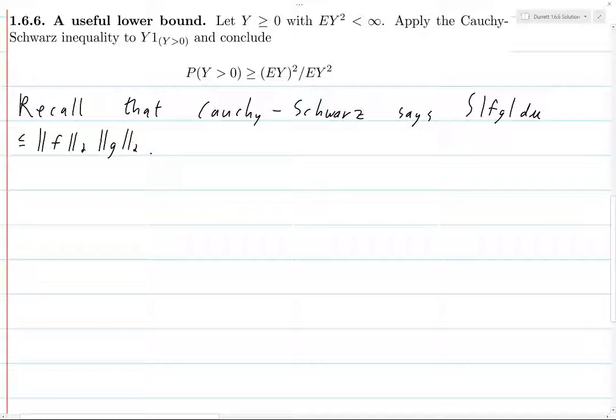This is a particular case of Holder's inequality which says that this will hold if you replace the twos on the right-hand side with p and q where 1 over p plus 1 over q equals 1. And 2 and 2 just happens to be a particular example because a half plus a half is 1.